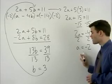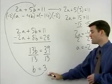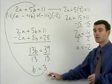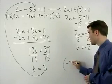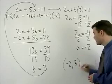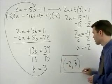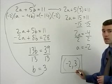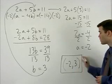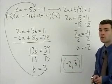Since a equals negative 2 and b equals 3, our answer is the ordered pair negative 2, 3. Notice that a comes before b in our answer. Always put your answer in alphabetical order.